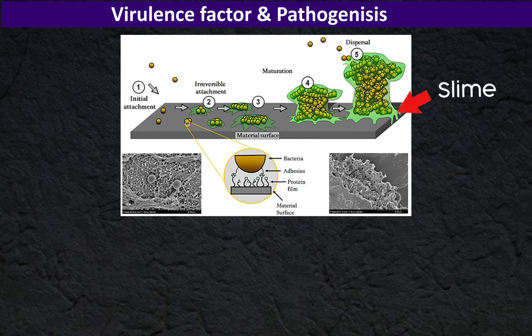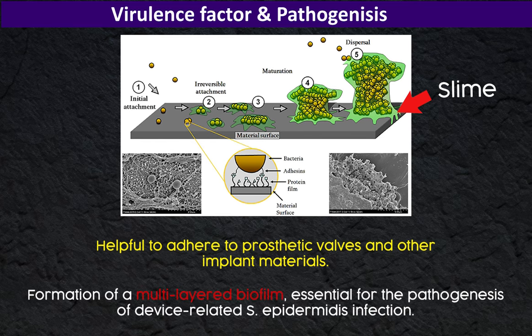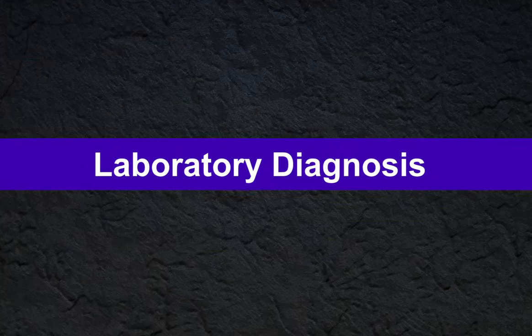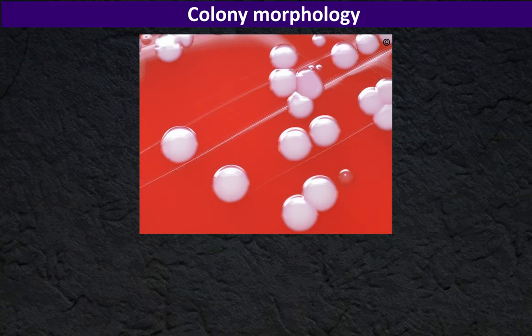Furthermore, it causes neonatal sepsis, osteomyelitis, wound infections, vascular graft infections, and mediastinitis. The ability to produce polysaccharide glycocalyx, namely slime, is an important virulence factor of the bacteria. It is helpful in adhering to prosthetic valves and other implants, and the formation of a multi-layered biofilm is essential for the pathogenesis of device-related S. epidermidis infection.